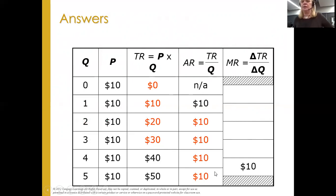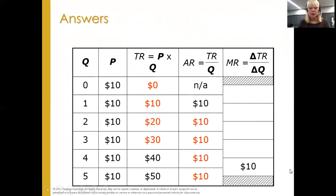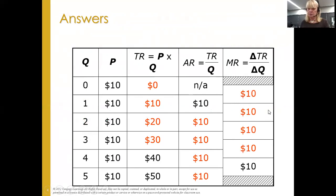Marginal revenue works the same way. Every time we sell another unit, total revenue changes by 10 and quantity changes by 1. When we go from 0 to 1, total revenue changed by 10 and quantity changed by 1 — 10 divided by 1 is 10. From 1 to 2, total revenue changed by 10 again. It's 10 all the way down. Take a minute and go through these numbers yourself, and pause the video if needed.